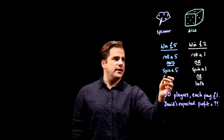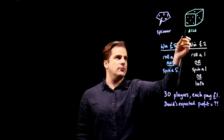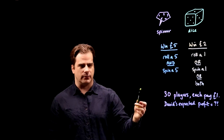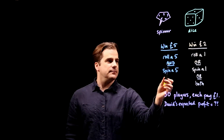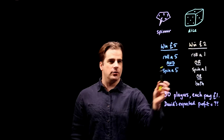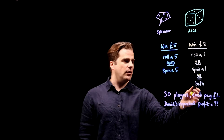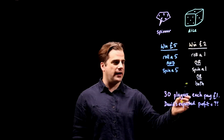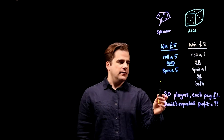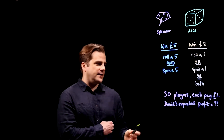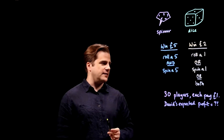To win five quid, you have to roll a five and spin a five. You get one roll of the dice and one spin of the spinner. The 'and' is important as opposed to 'or' — that affects the maths. And you win two quid if you roll a one or spin a one, or roll a one and spin a one — both. Dave's getting 30 of his mates to play, each paying a quid. What is David's expected profit?